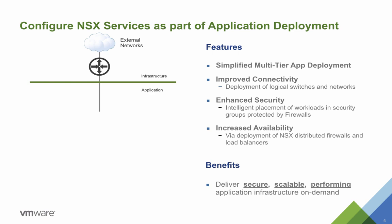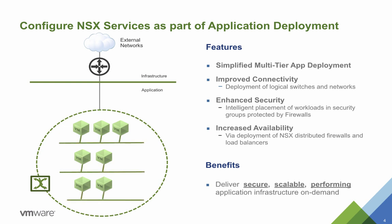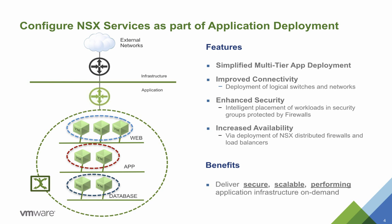Today, applications need much more than just appropriately sized virtual machines. They also need networks configured with appropriate connectivity, security, availability, scale and performance. vCloud Automation Centre can dynamically provision NSX logical services customised to the specific needs of each application. As part of deploying a complex multi-tier application, vCloud Automation Centre improves connectivity through deployment of logical switches and networks, improves security through the intelligent placement of workloads into security groups protected by dynamic firewall rules, and increases availability and performance utilising NSX distributed firewalls and load balancers.